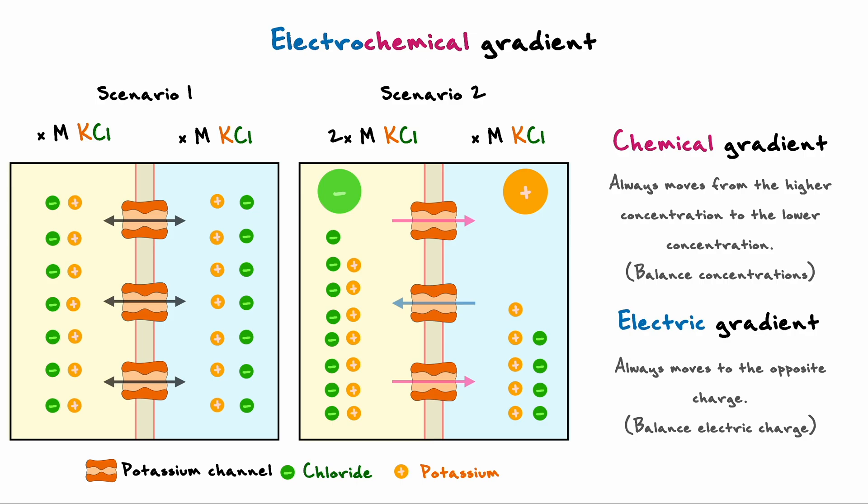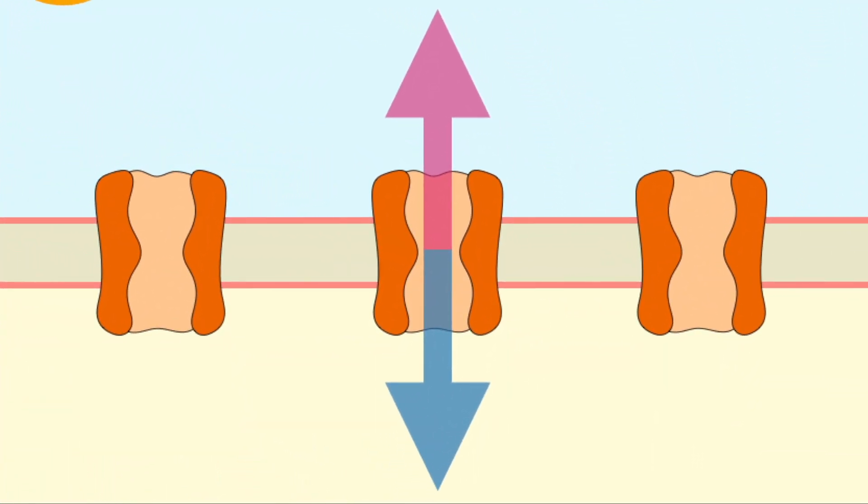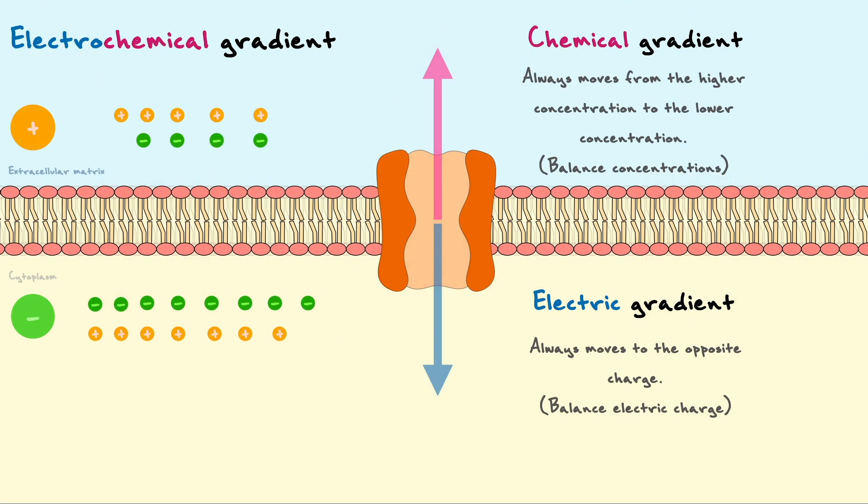If potassium continuously flows, at some point it will equilibrate such that the force it feels from its chemical gradient is equal to the force it feels from the electric gradient. As you can see in this example, regardless of how the potassium ions move, it won't be possible for them to be equally concentrated on either side and fully neutralize the charge. Nonetheless, their drive to equilibrate the chemical and electrical gradients is equally as strong, which essentially constitutes a form of equilibrium for potassium.